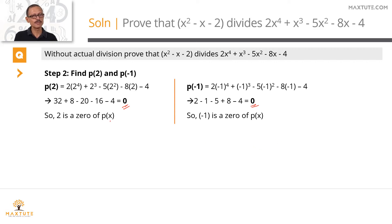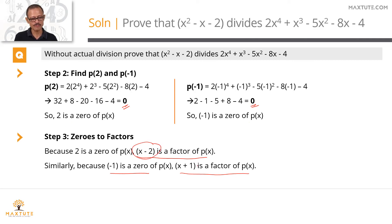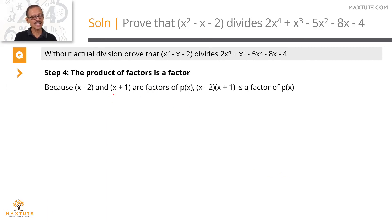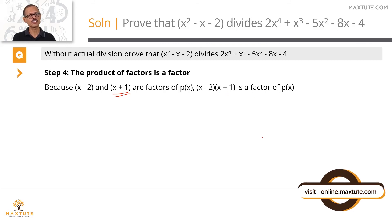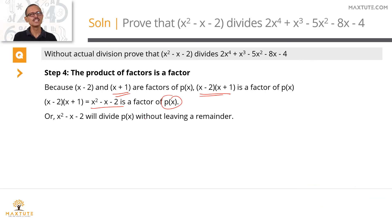Step 3: if 2 is a zero of p of x, then by the factor theorem, x minus 2 is a factor of p of x. If minus 1 is a zero of p of x, then x plus 1 is a factor of p of x. So we have deduced that x minus 2 and x plus 1 — which are the factors of q of x — are now also factors of p of x. Step 4: if x minus 2 and x plus 1 are both factors of p of x, then their product x minus 2 times x plus 1 is also a factor of p of x. But x minus 2 times x plus 1 equals x squared minus x minus 2, which means x squared minus x minus 2 is a factor of p of x, and therefore it divides p of x without leaving any remainder — which is what we wanted to prove.